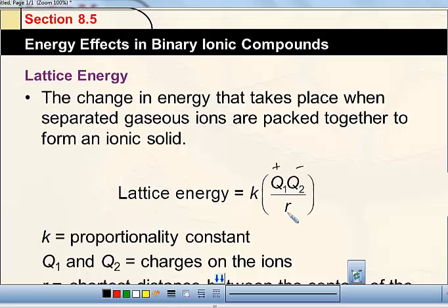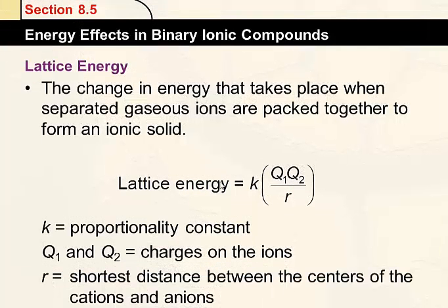R is the distance between the two ions. So the closer they get together, the higher the lattice energy is, because this R number becomes a smaller number. The Qs are the charges of the ions. So the higher the Qs, the higher the charges, the greater the lattice energy. So it depends on those two things. It depends on the charges and it depends on the distance between the ions. Those are the two big things that we think about when we think about lattice energy.